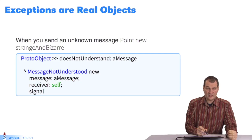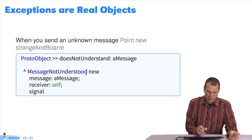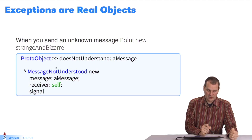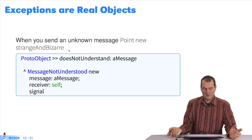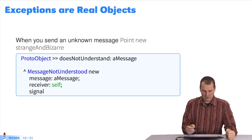Exceptions are real objects. If we look at how the doesNotUnderstand message is defined, you can see it in ProtoObject in your Pharo browser. You do 'MessageNotUnderstood new', send a message to the receiver which is the object, and give a signal. You get this signal when you send 'Point new strangeAndBizarre' — it's not a known message, so it will create this exception.